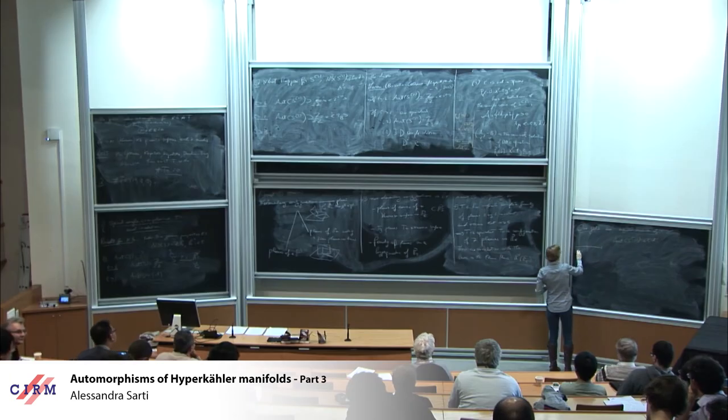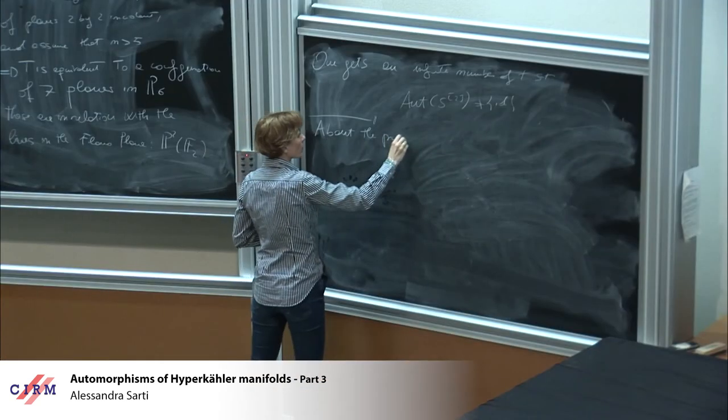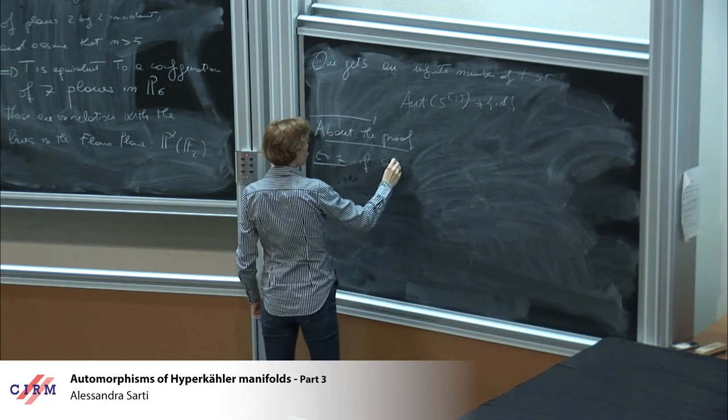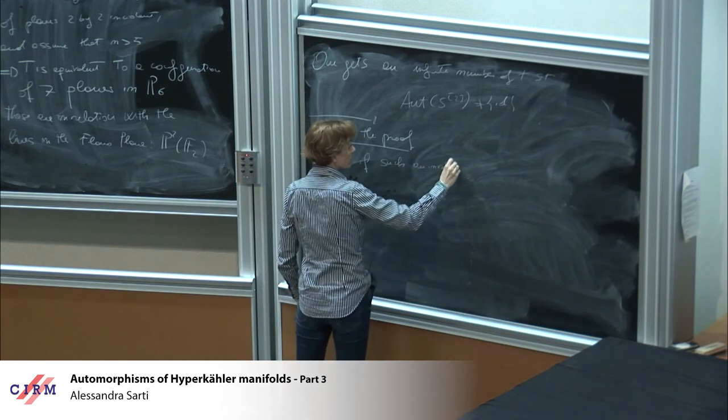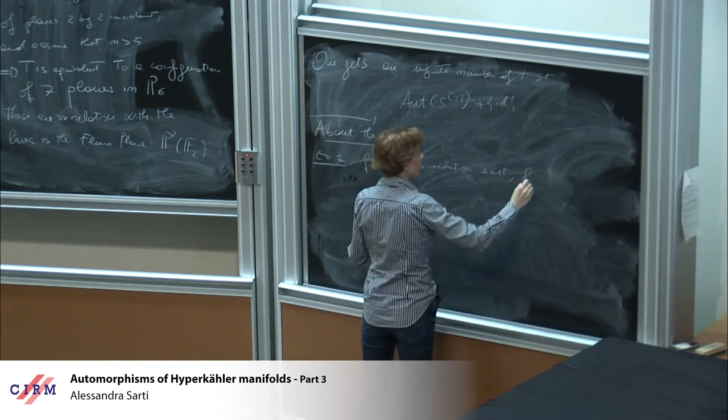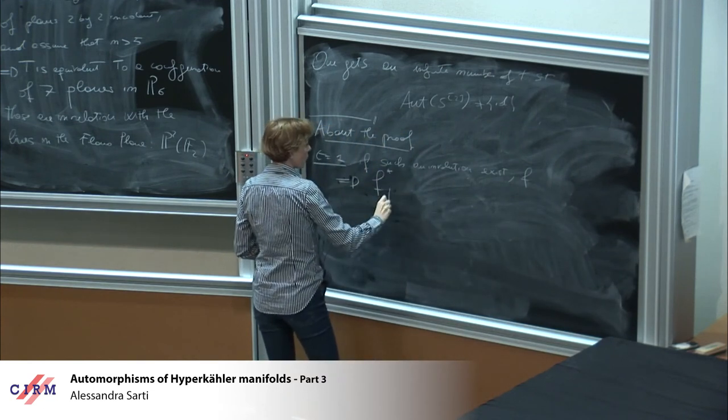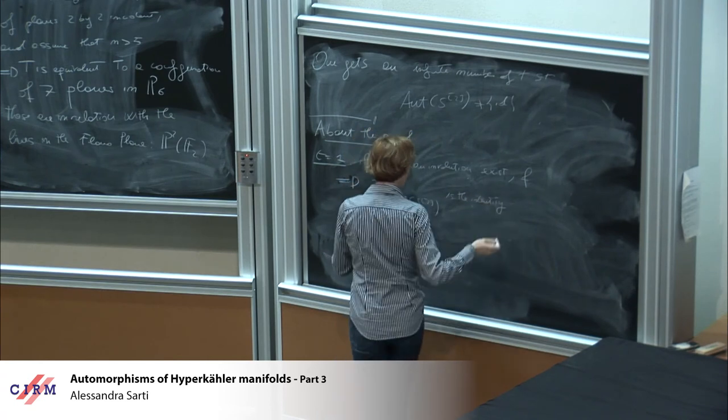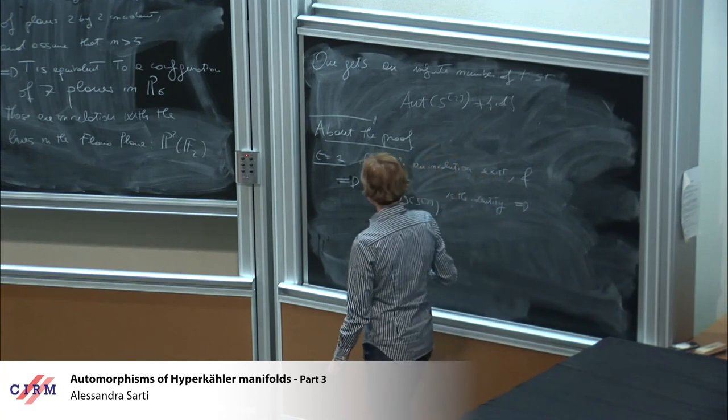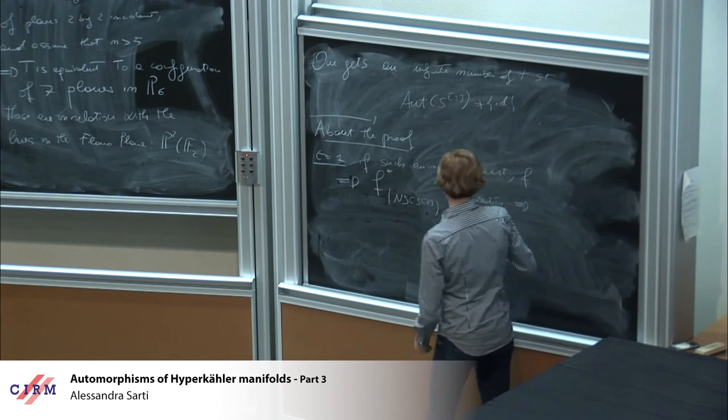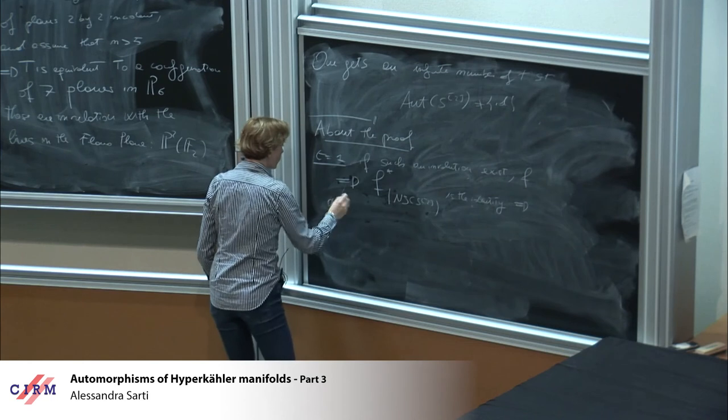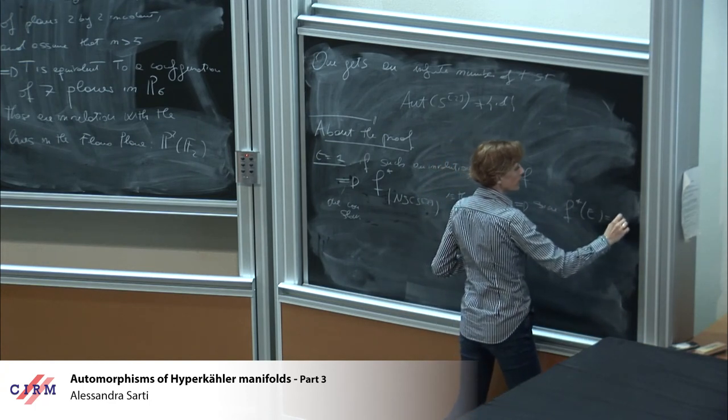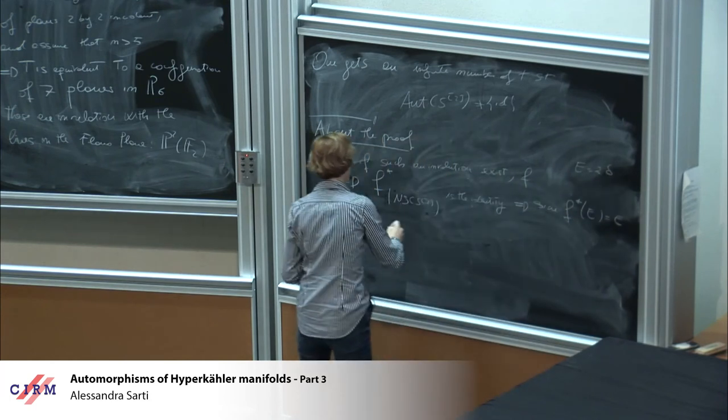So we have that t is not a square, the Pell equation Pt minus one, x square minus t y square equal to minus one, has a solution, and the ample cone of S2 is lambda h minus mu delta such that mu is positive and a mu is less than minus t g lambda, where this a and b, let's say a minus b, so a is positive, a minus b is positive.